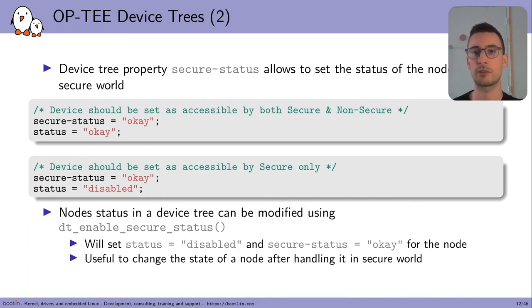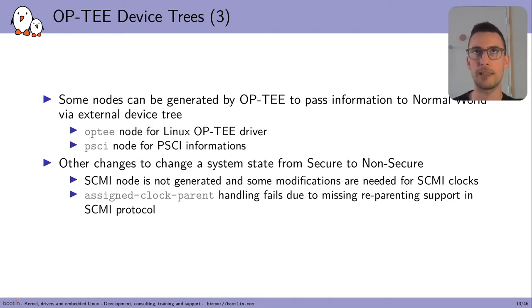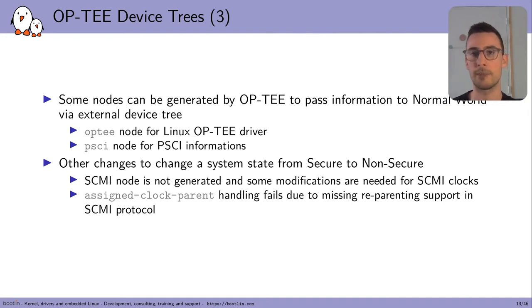In order to specify if a device is secure or non-secure, there is a new property named SecureStatus, which allows setting the status of a node for the secure world. For instance, if a device should be accessible by both worlds, you set both the SecureStatus and the status property to OK. If you want a device only accessible by secure, set status to Disabled and SecureStatus to OK. The node status in the device tree can be modified using DT_ENABLE_SECURE_STATUS. The SCMI node will not be generated by OP-TEE and you have to modify the clock references to use the new SCMI clocks in the non-secure device tree. There is also assigned clock parents handling which will fail due to missing reparenting support in the SCMI protocol, so you will have to adjust the non-secure device tree to handle that.